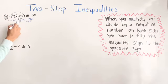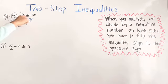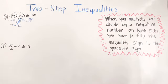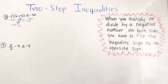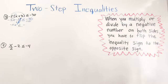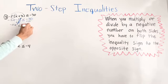Now we have negative 5x — the 15s cancel — and on the right side we have negative 30 plus 15. We have two different signs, so we subtract. The bigger number is 30 and its sign is negative, so the answer is going to be negative. Subtracting 15 from 30 gives us 15, so we have negative 5x is less than or equal to negative 15.